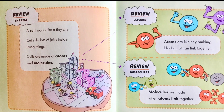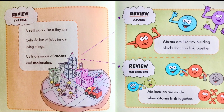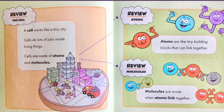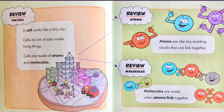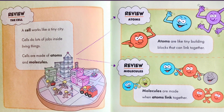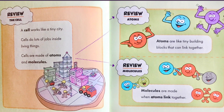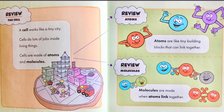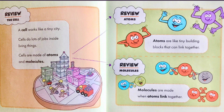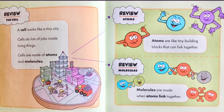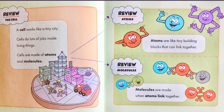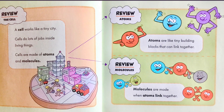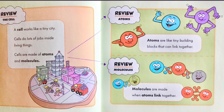A cell works like a tiny city. Cells do lots of jobs inside living things. Cells are made of atoms and molecules — if you want more of a description, go check out my other video, the cell: a tiny city. Atoms are like tiny building blocks that can link together. Molecules are made when atoms link together.